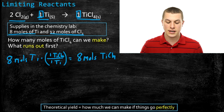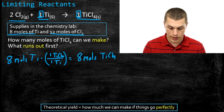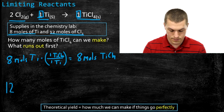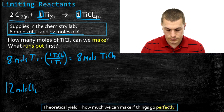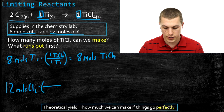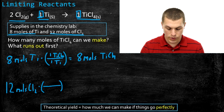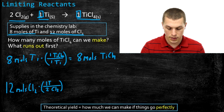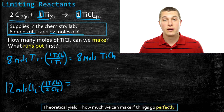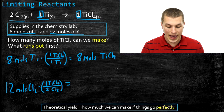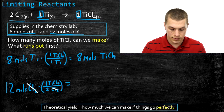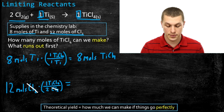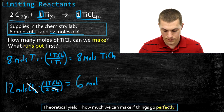We're not done yet — that only tells us what we can make with one ingredient. Now let's do the same for chlorine. I start with 12 moles of chlorine. The reaction shows a coefficient of 2 in front of chlorine and 1 in front of titanium chloride. Writing the conversion factor with 2 Cl₂ in the denominator and 1 TiCl₂ in the numerator, the moles of chlorine cancel and I get 6 moles of titanium chloride.